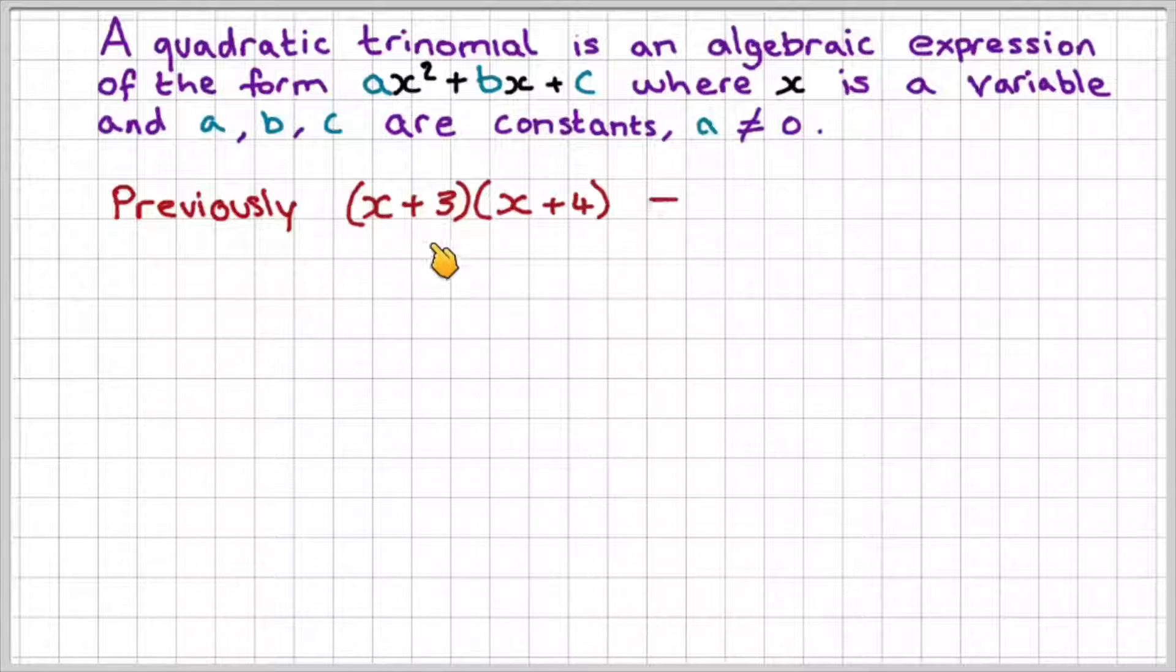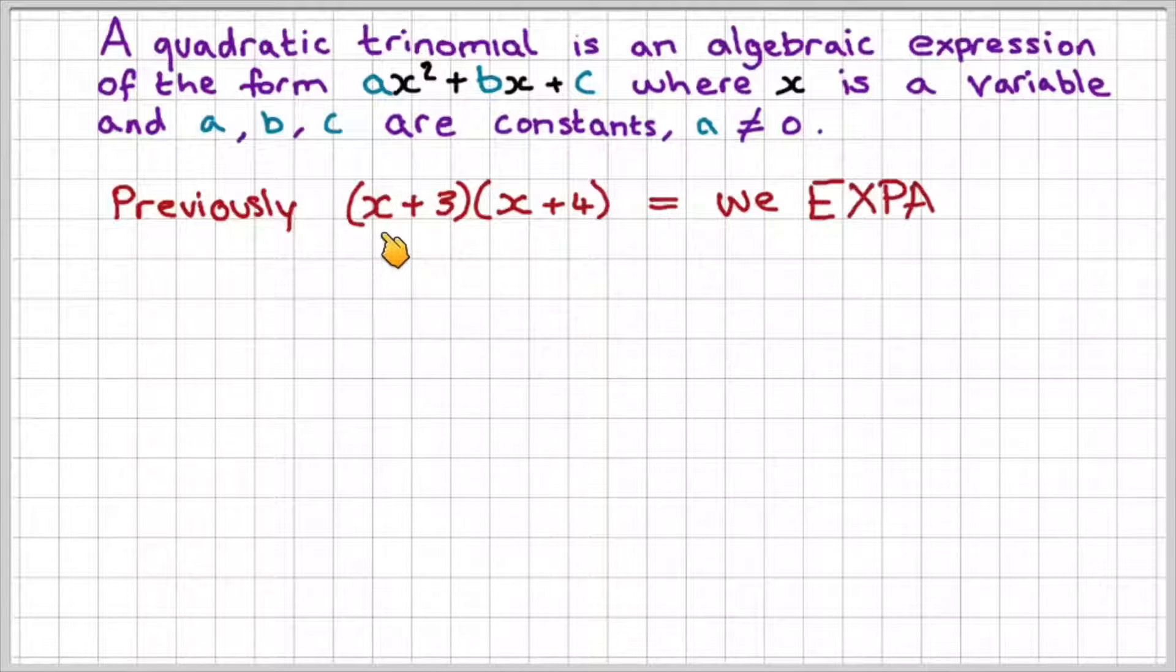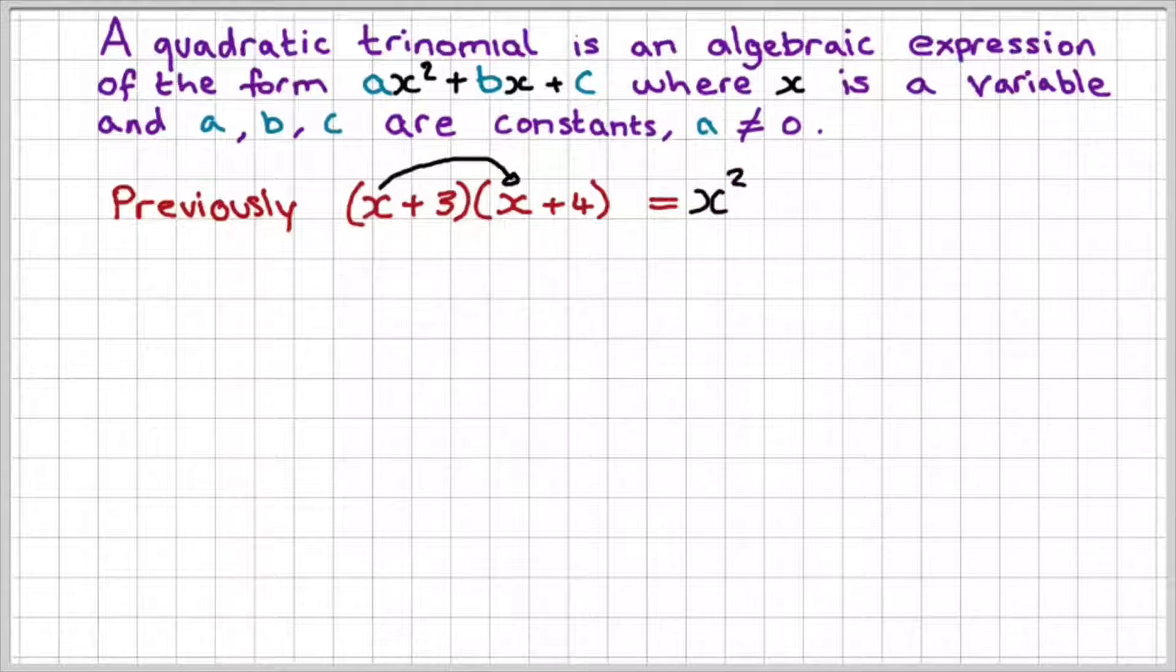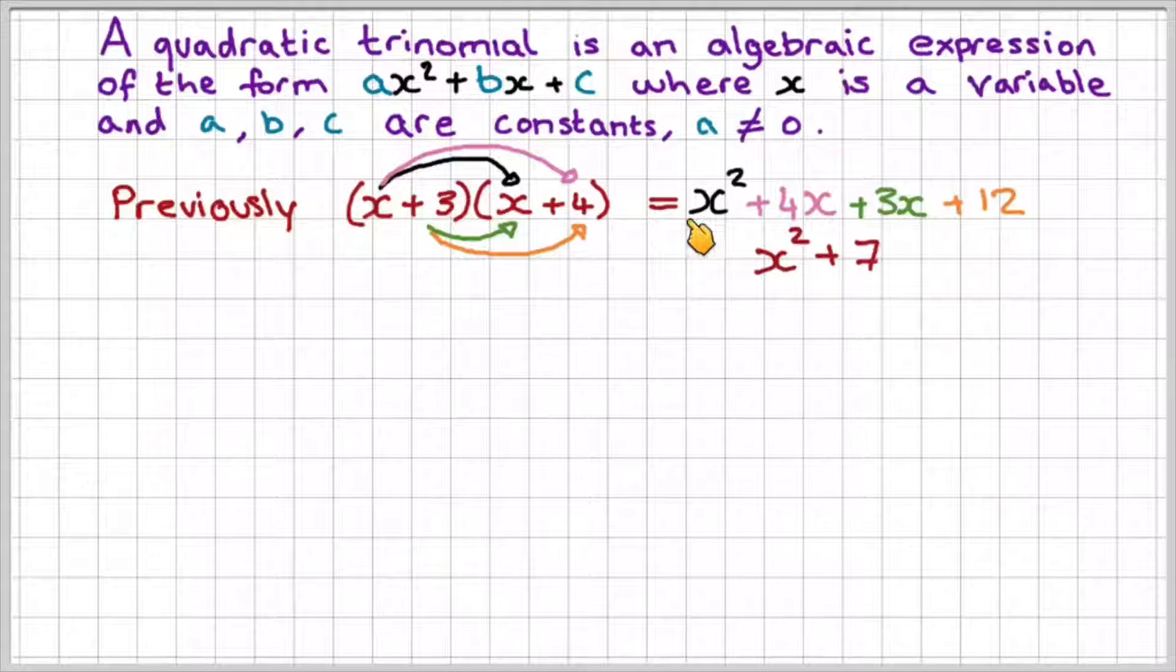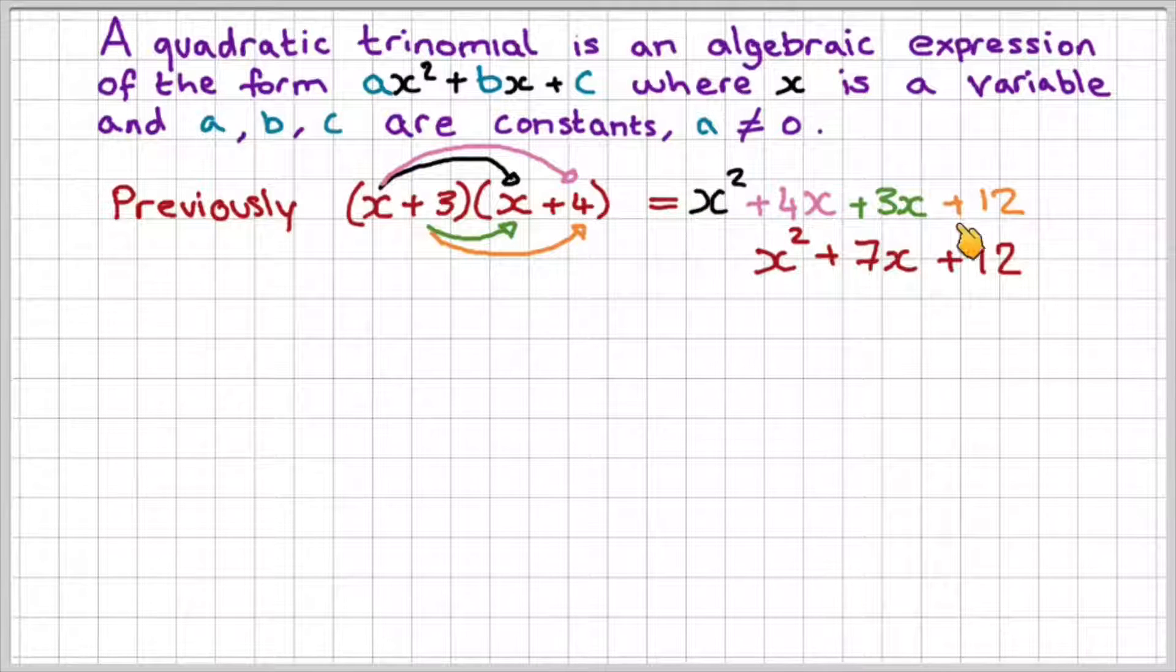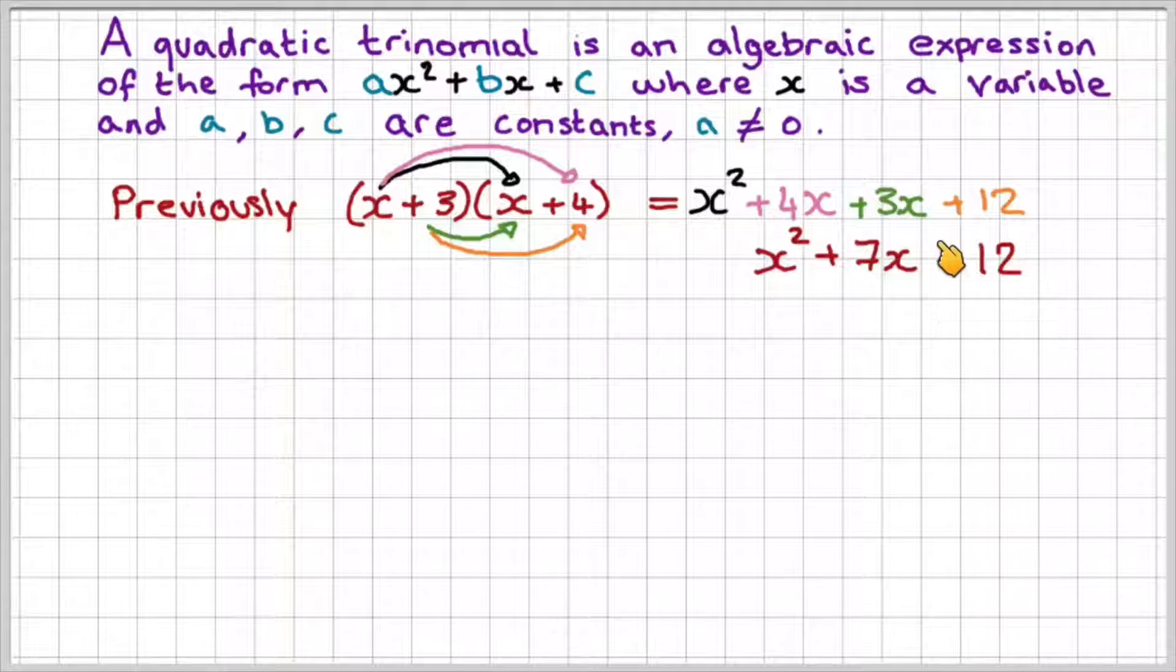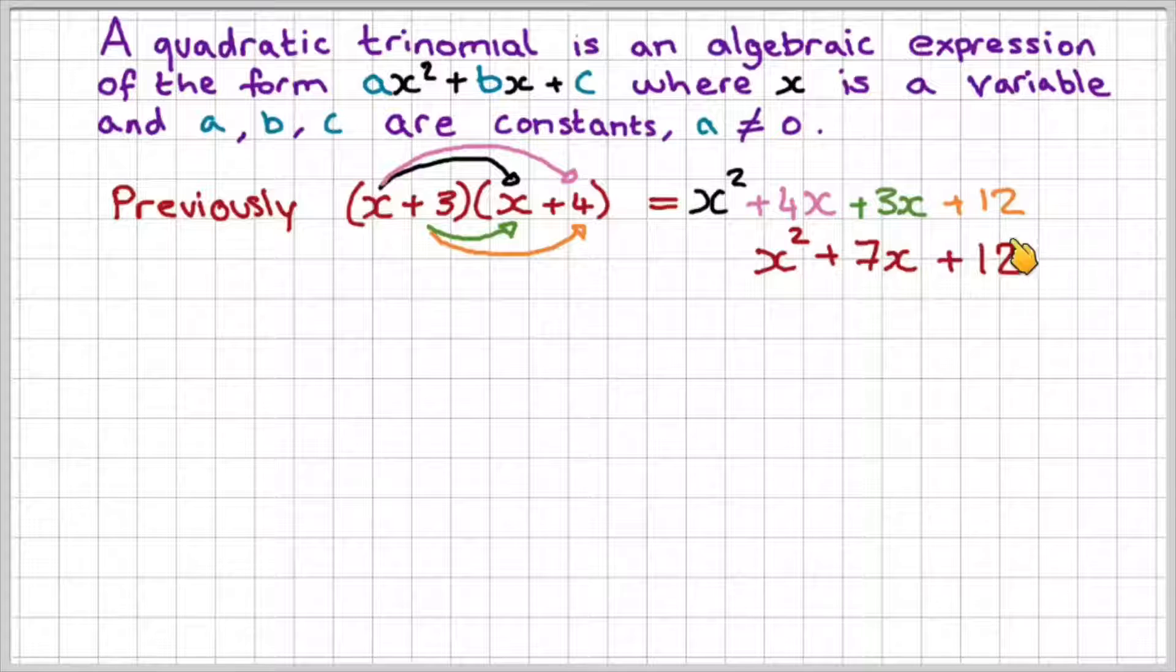Previously, if we had an expression x plus 3 bracket x plus 4, we expand this as follows to make a quadratic. So x times x is x squared. We clean that up and get x squared plus 7x plus 12. That is our quadratic trinomial.